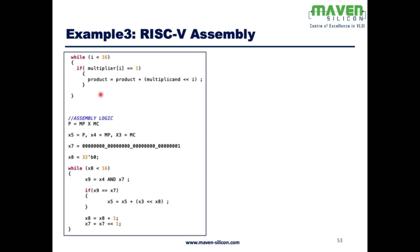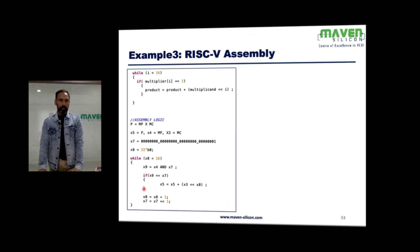We can't implement a for loop directly in assembly, so we need to visualize the logic using a while loop. The same logic applies: while i is less than 16, continue the loop. If that particular bit of the multiplier is set, do product = product + (multiplicand left shift i). When it comes to assembly, we need to think in these terms.